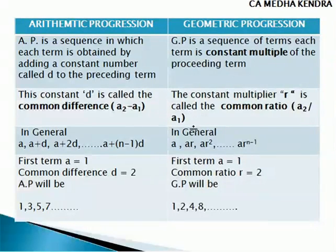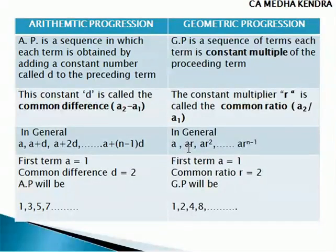In case of geometric progression, the first term is A, and we multiply by the common ratio R. So the terms are A, AR, AR squared, and so on. The Nth term is AR power (N minus 1).